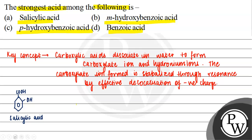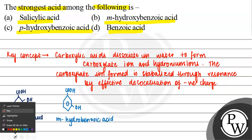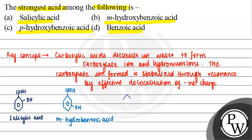For meta-hydroxybenzoic acid, the structure is similar but the hydroxyl group is at the meta position. For para-hydroxybenzoic acid, the hydroxyl group is connected to the para position — this is our para-hydroxybenzoic acid.